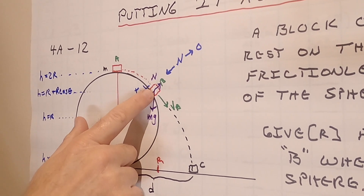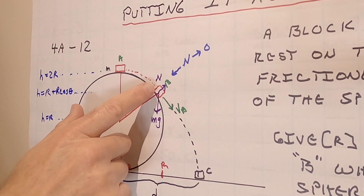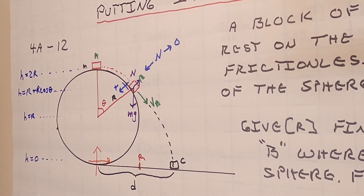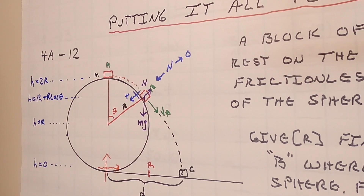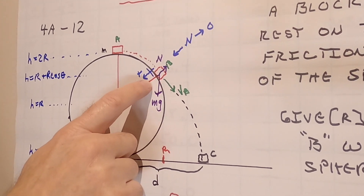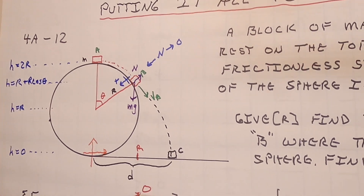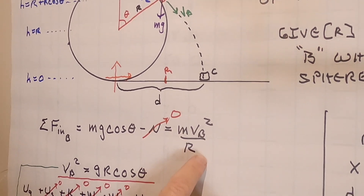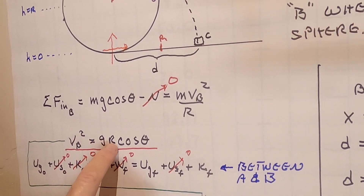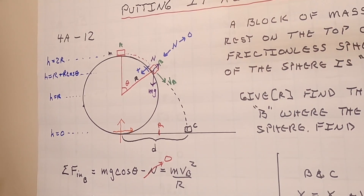At that point, the only force we have is mg — there's no normal force anymore. We're going in a circle, so the inward component is mg·cosθ, and that equals mv_B² / r. Solving for v_B gives us v_B² = gr·cosθ. So we've got the speed as a function of theta.